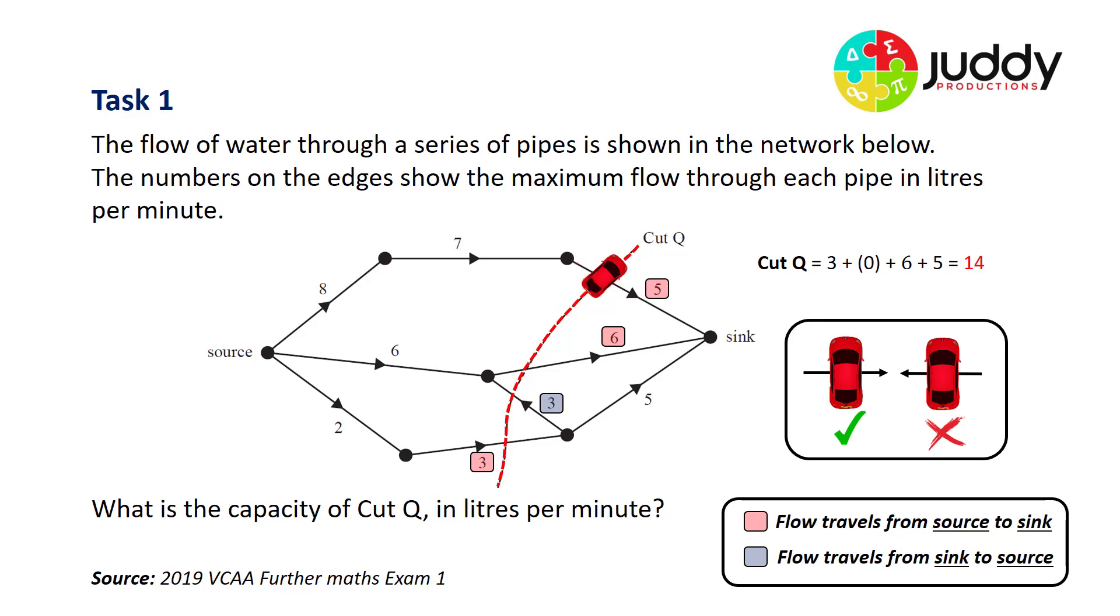That gives me a total cut capacity of 14. So the answer to our question: the capacity of cut Q is 14 litres per minute, simply summing up the individual edge weightings and ignoring any that flow from the sink to the source.